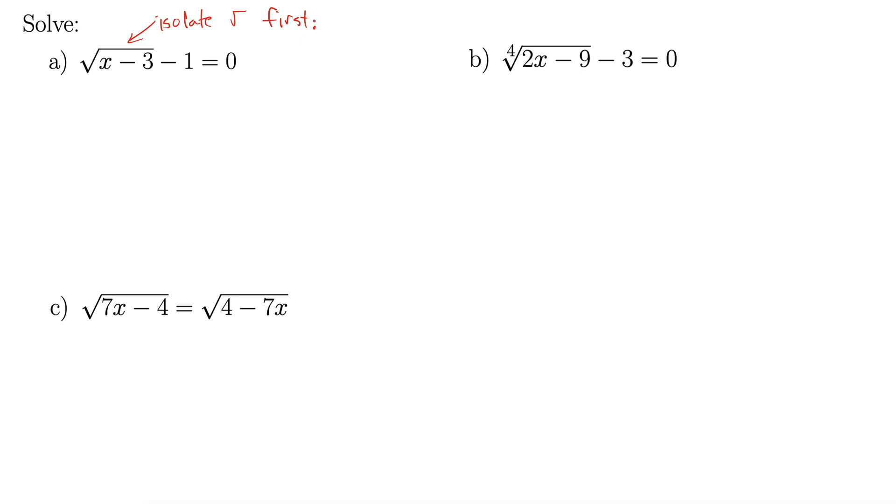Okay, and that will go for all of these examples, right? This b as well. You can't really do it in c because there's already one on each side. But by isolate, I mean get it on one side of the equal with everything else on the other. Okay, so that's not so bad. Let's just add 1 to both sides. Alright, that gives us radical x minus 3 equals 1.